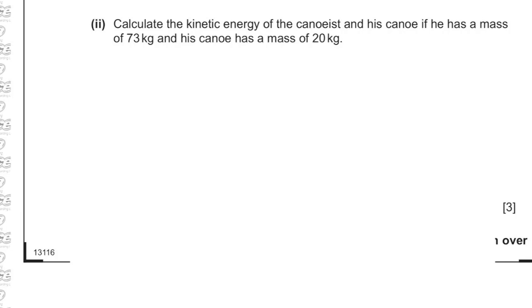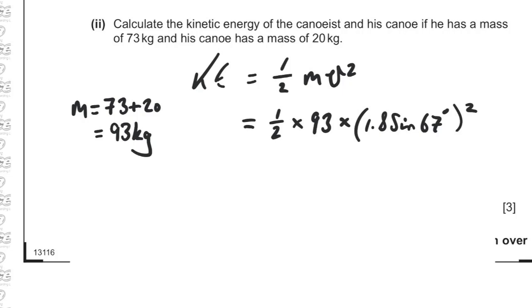Calculate the kinetic energy of the canoeist and his canoe: the canoeist has mass 73 kg and the canoe has mass 20 kg. Kinetic energy is ½mv². We add the two masses: 73 + 20 = 93 kg total. So KE = ½ × 93 × (1.8 sin 67)² = 128 joules. Again the mark scheme doesn't quite agree because SQA are using earlier rounded values.